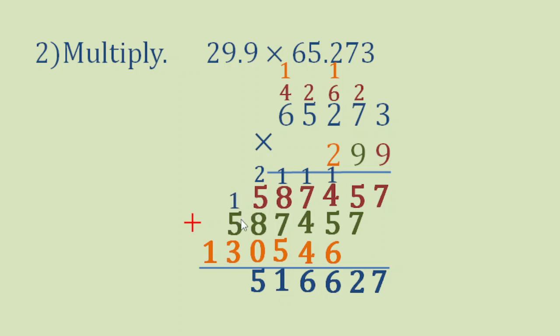1 plus 5 is 6, 6 plus 3 is 9. And then 1 by itself copied down.